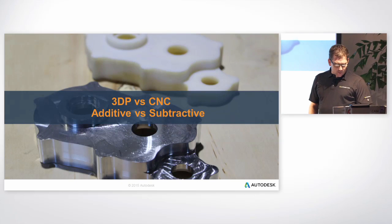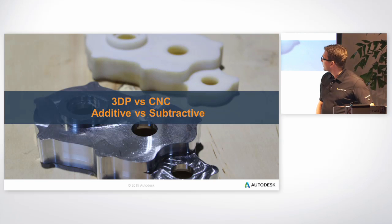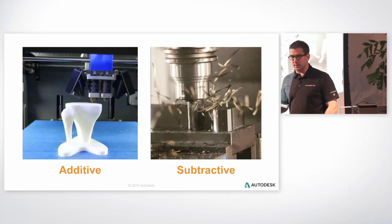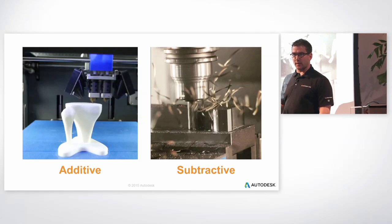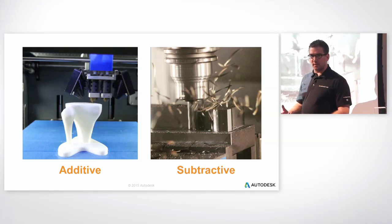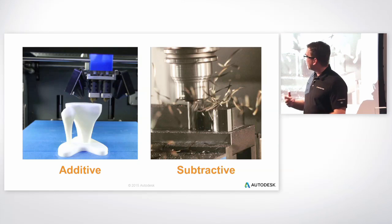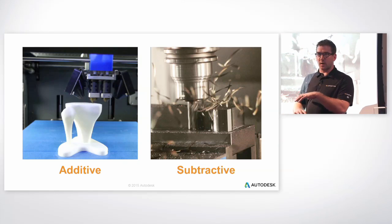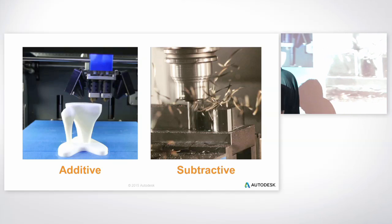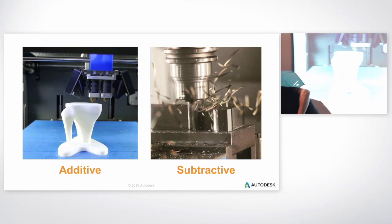So to start: what is 3D printing versus CNC machining? It really comes down to an additive process where you're building material up — which is what we talk about with 3D printing or additive — versus subtractive, where you're taking material away. With additive, you start with a vat or a spool of material, and it grows the part.